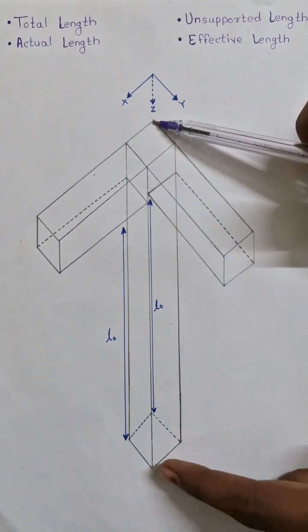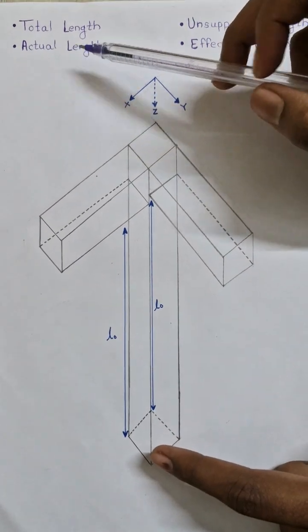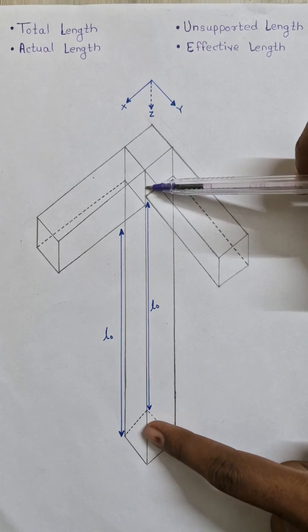Total length is the out to out length of the column, whereas actual length is the center to center length of the column.